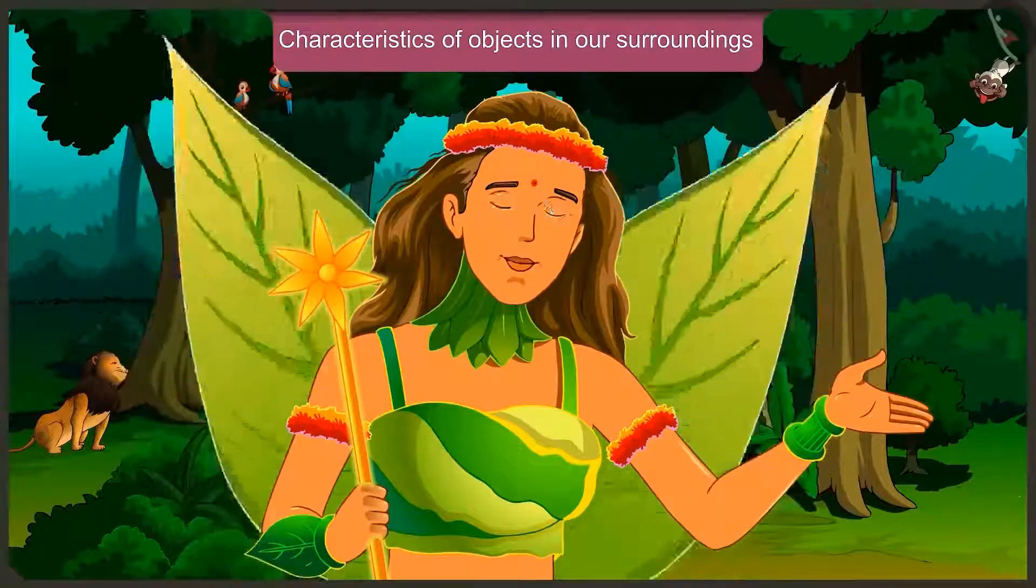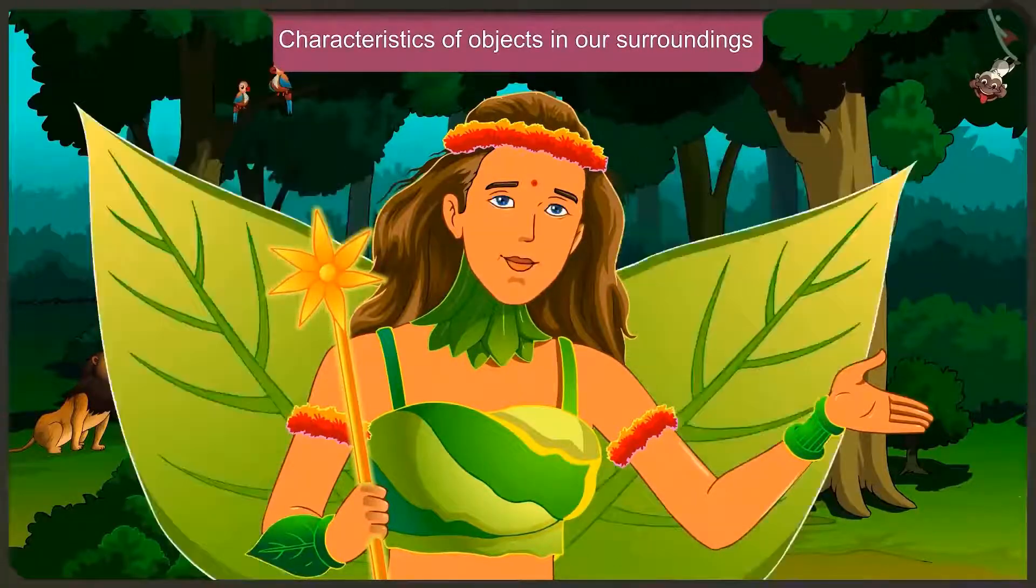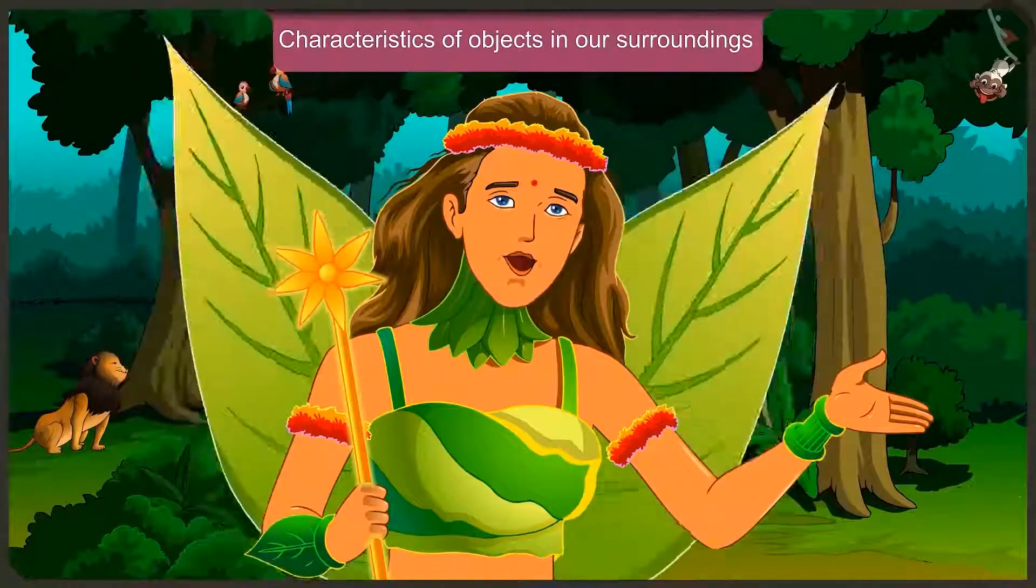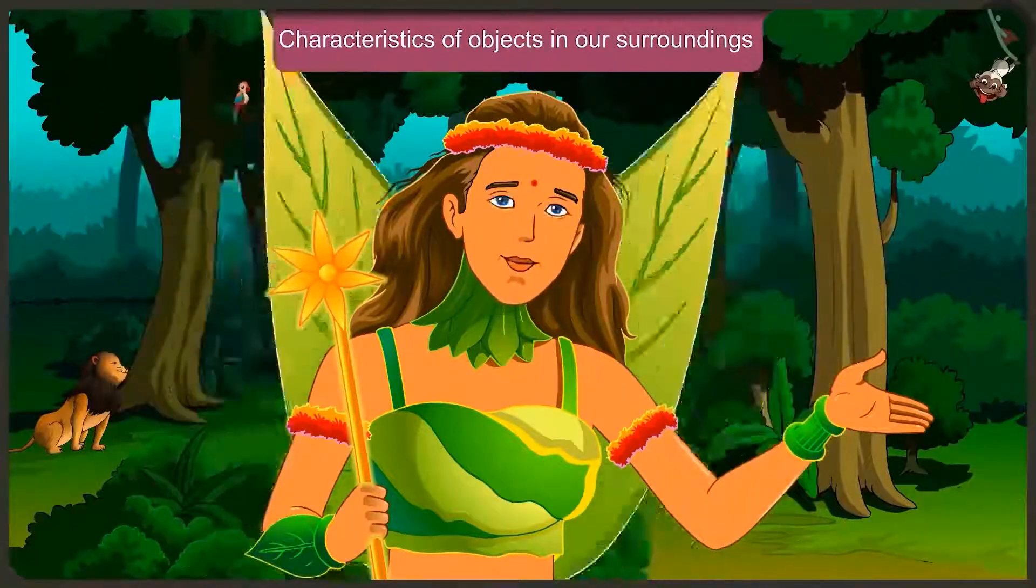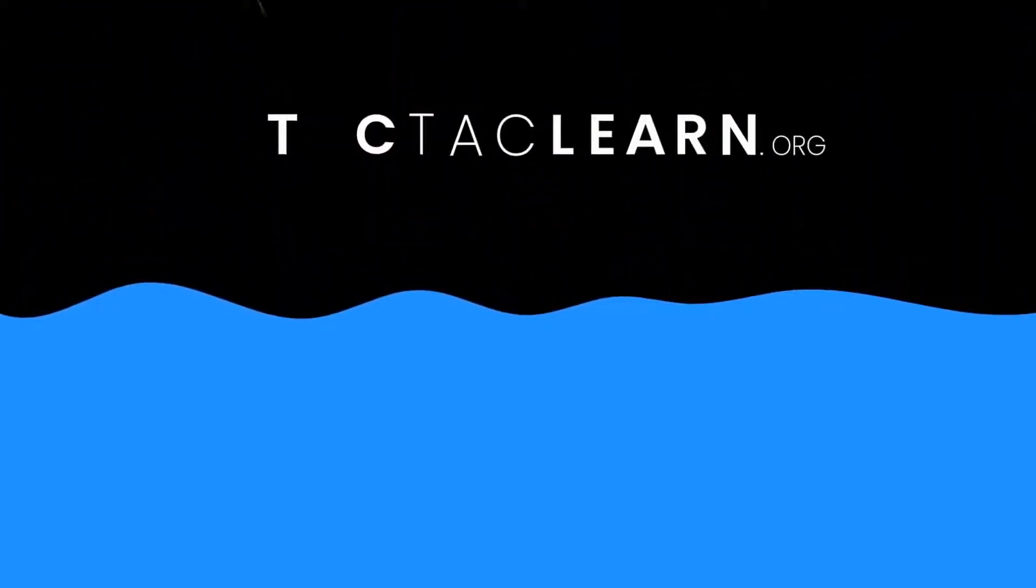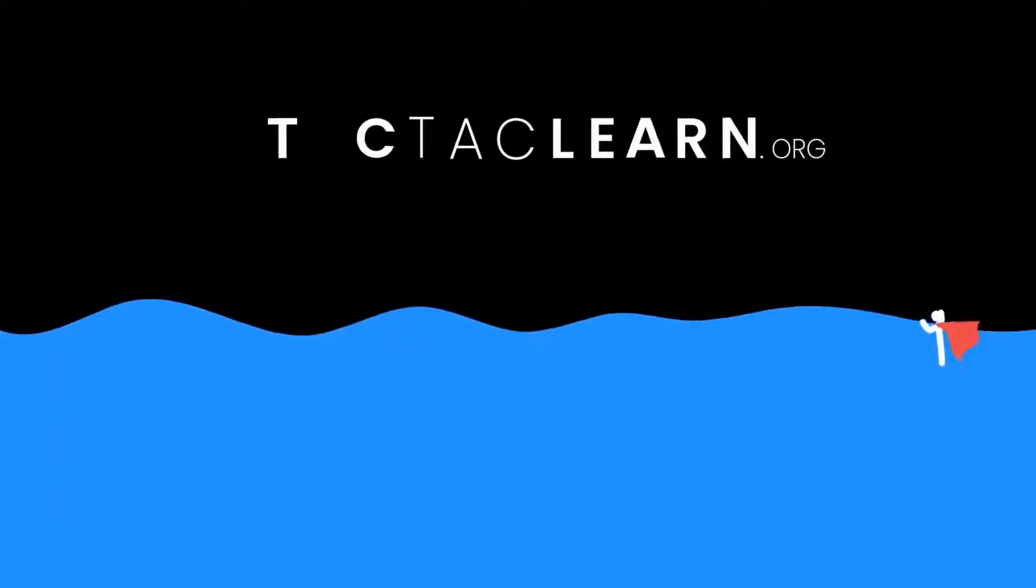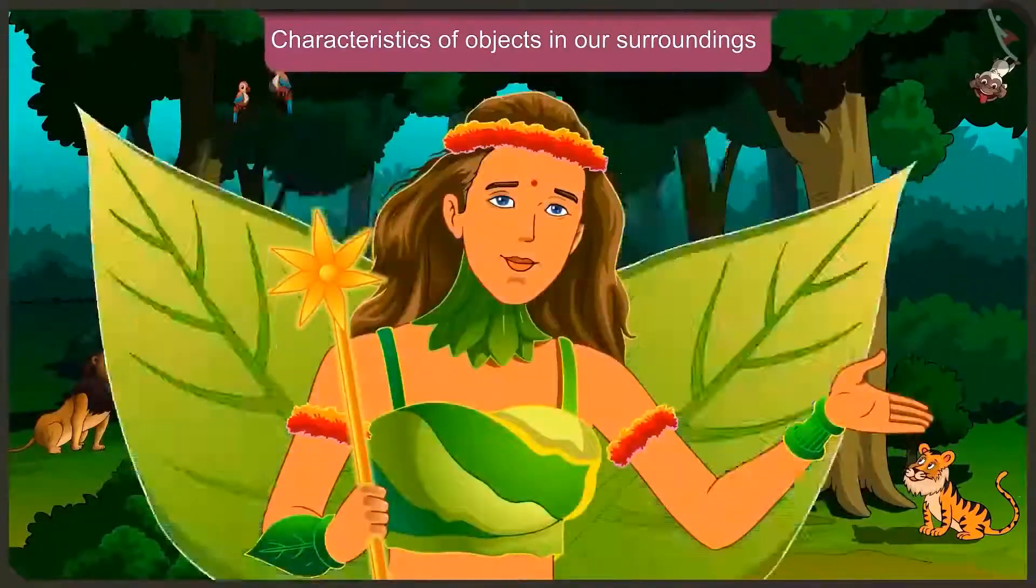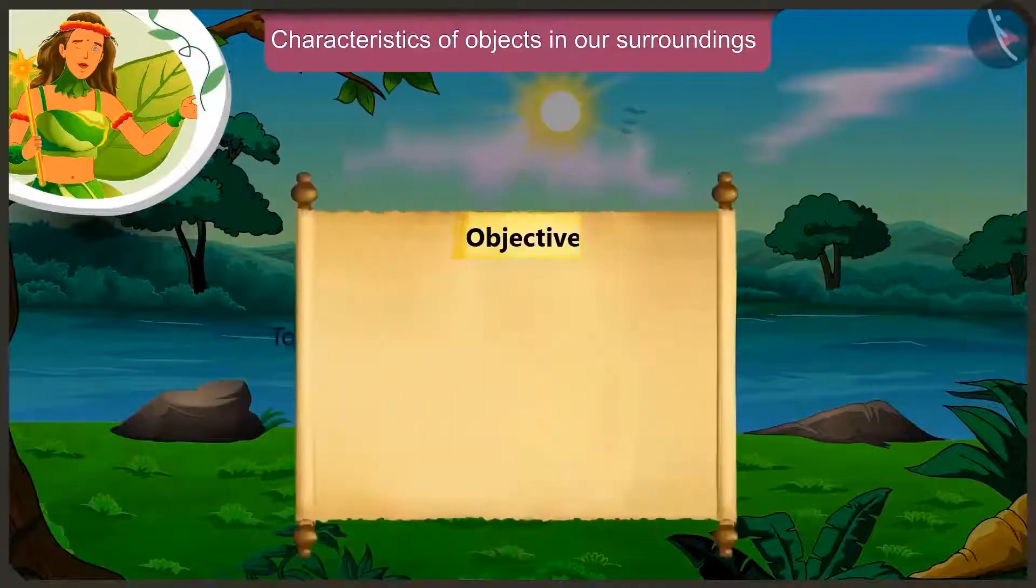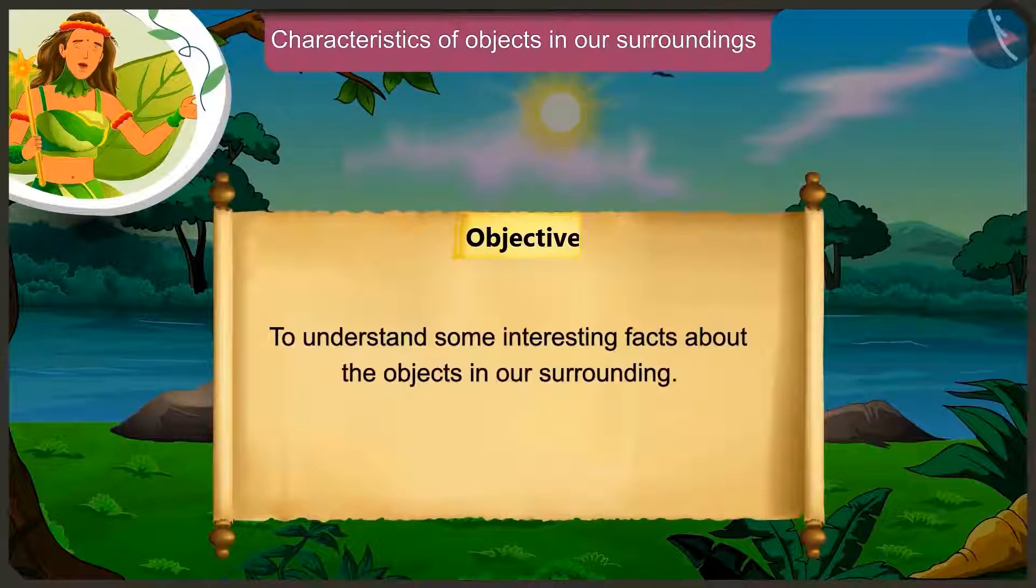Today we understood the characteristics of objects around us with some examples. In the next video, we will see the mistakes we make while understanding the characteristics of the objects around us. Friends, today we will understand some interesting facts about the objects in our surroundings.